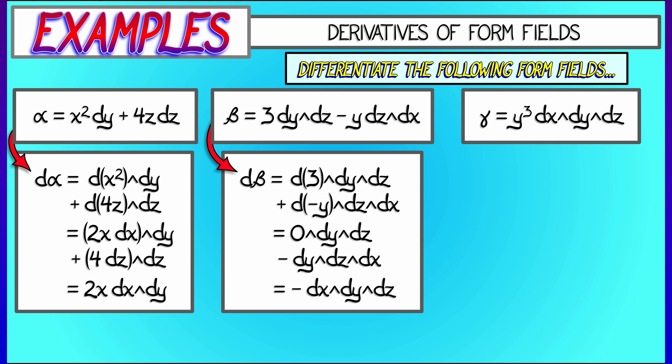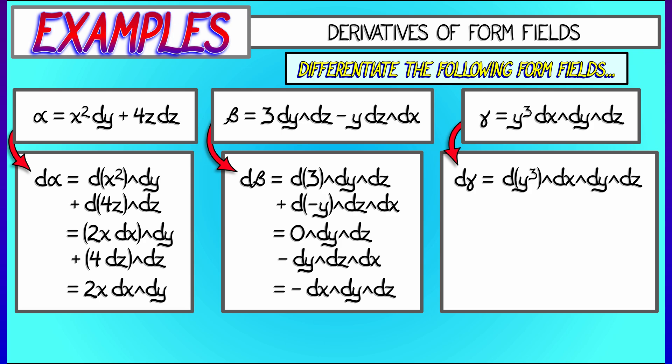Finally, the derivative of gamma is the derivative of y cubed, that zero-form out in front, wedged with dx wedge dy wedge dz. Now, since the derivative of y cubed is 3y squared dy, and I have two dy terms in this big wedge product, boom, it's zero, it all vanishes. This is going to hold in general, because the derivative of a three-form field is a four-form. And, as we know, four-forms in R3, they're always zero.